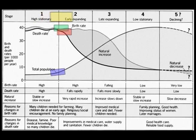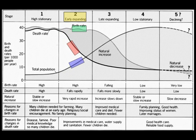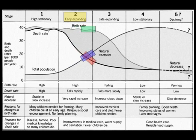When a country moves into stage two of the DTM, it experiences an extremely rapid drop in the death rate. This could be due to improvements in sanitation, health care, or food and water supplies. The birth rate remains high, and the end result is a huge population boom.